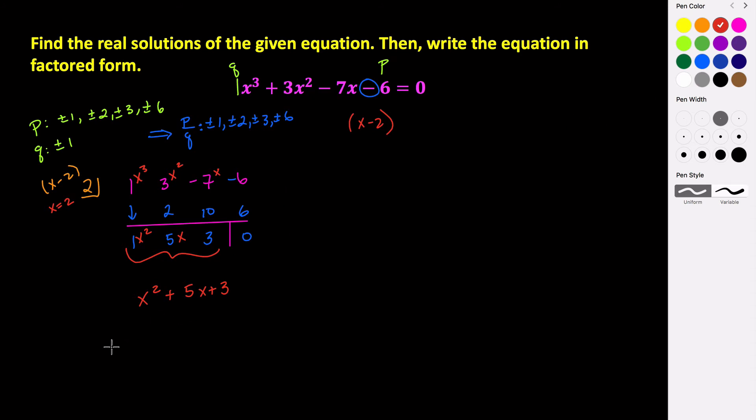So if we look at factoring this, we want to know what multiplies to be 3 and adds to be 5. Well, if you think of the factors of 3, the factors of 3 are 1 and 3. And that's it. And 1 plus 3 doesn't equal 5. So what would we do? This doesn't work for factoring. So if we can't factor this, what can we use? What other methods can we use to solve a quadratic?